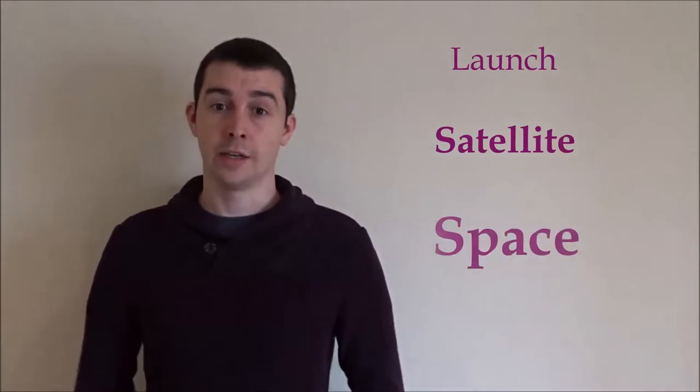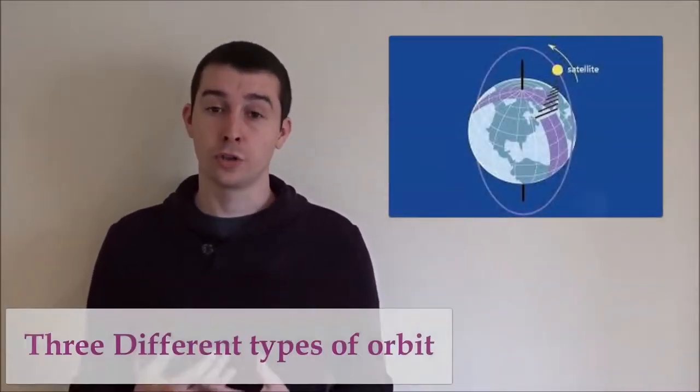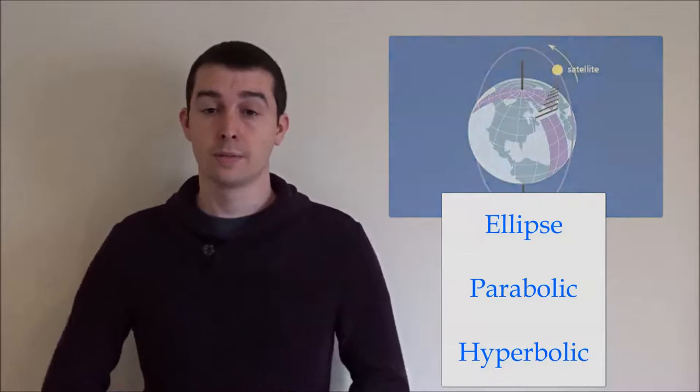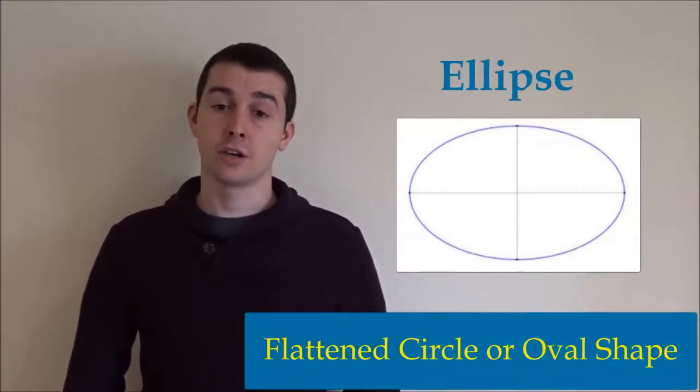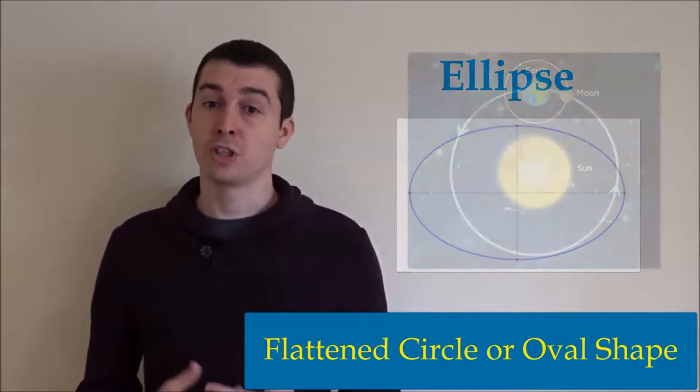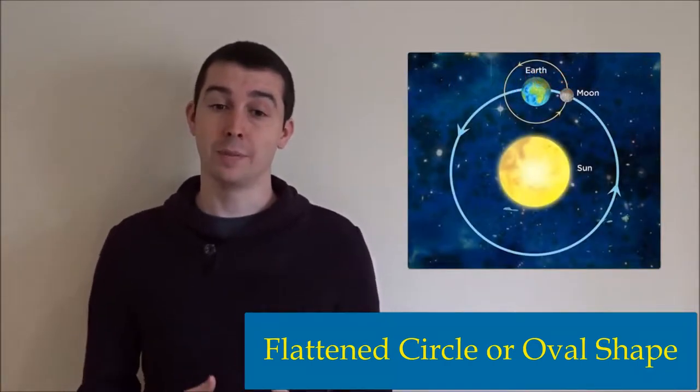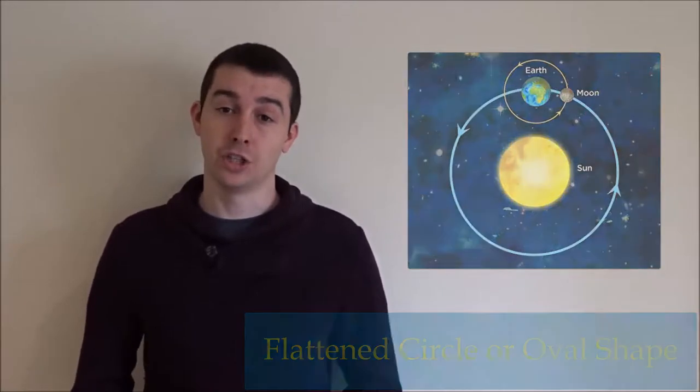When we launch a satellite into space we need to understand their orbit, the path they will follow. There are different types of orbits. Today we will look at three of these: ellipse, parabolic, and hyperbolic orbits. An ellipse is a flattened circular or oval shaped orbit. A circular orbit is a special type of ellipse orbit. Planets and moons orbit in ellipse patterns around larger gravitational bodies.